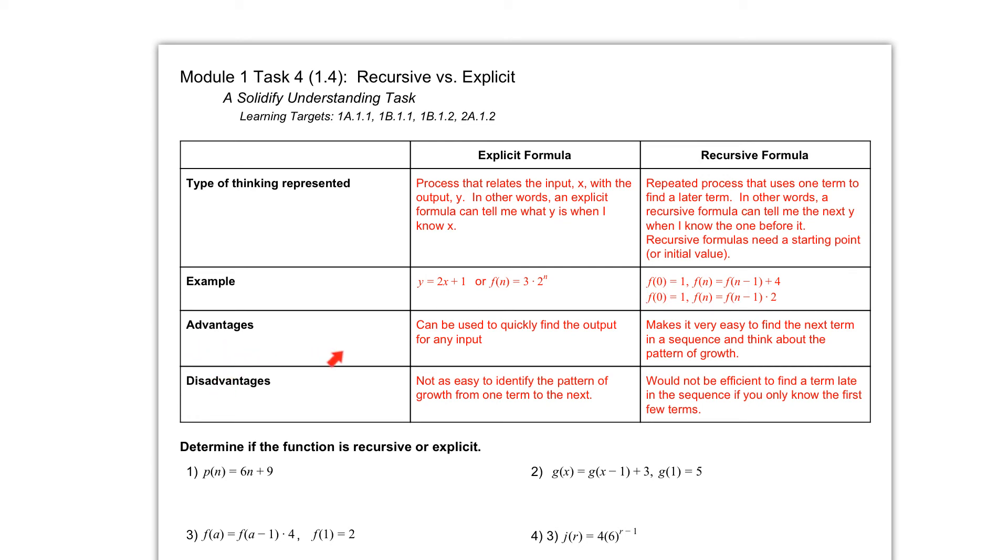Advantages and disadvantages. The advantage of an explicit formula is it can be used to quickly find the output for any input. So again, we can find that 100th term if we wanted to very easily. A disadvantage is it's not as easy to identify the pattern of growth from one term to the next.